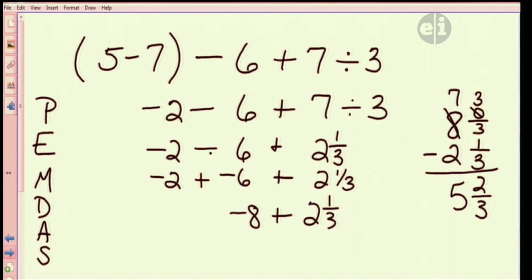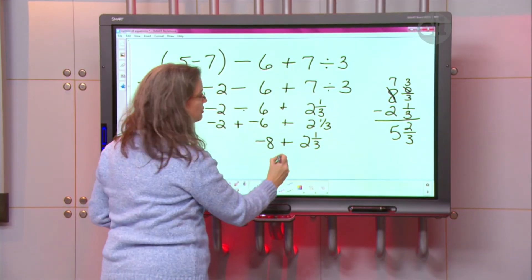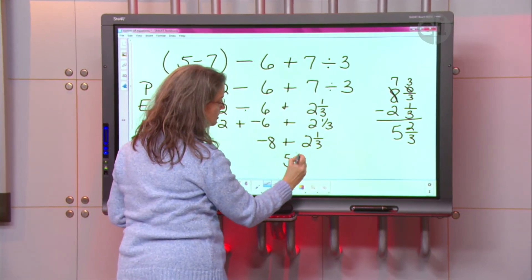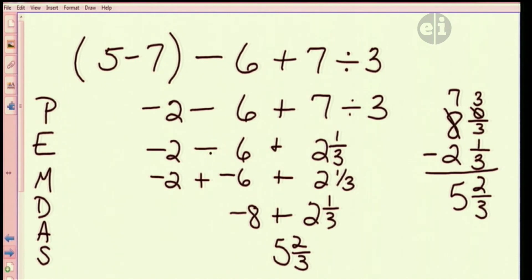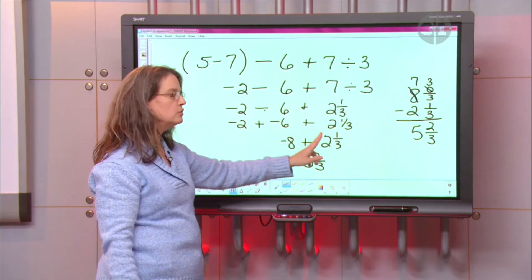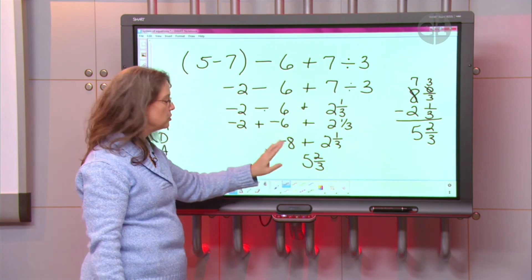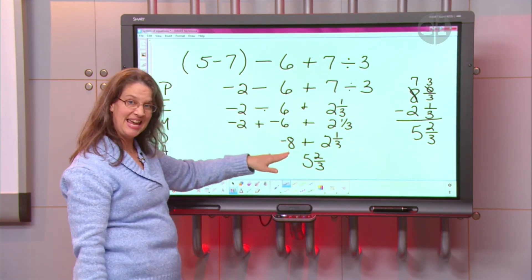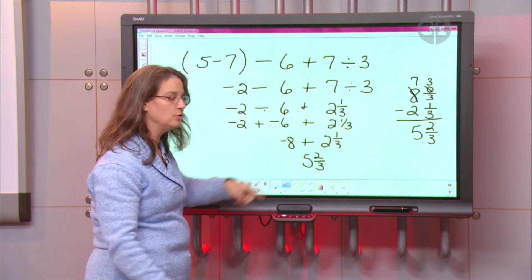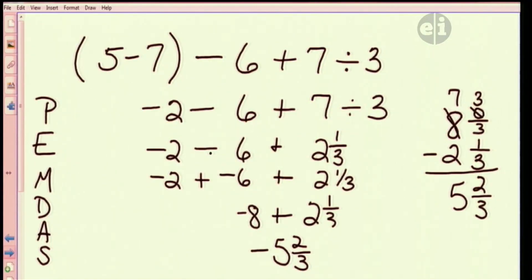So I know that when I do that math, that it's going to be 5 and 2/3. But now you have to make sure you include the sign. Do you have more negatives or more positives? Well, there's more absolute value of 8 than there is 2. So my sign has to become negative.